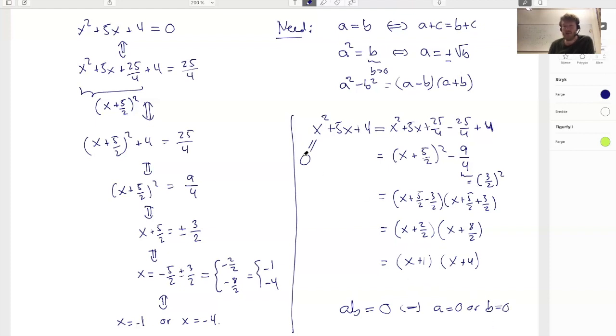So if this product is 0, it's because either this guy is 0 or that guy is 0. But this is 0 if x is minus 1. And this is 0 if x is minus 4, which is exactly what I found here. So you can see if we factorize an expression,